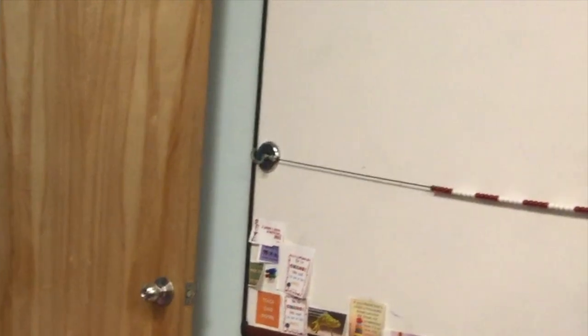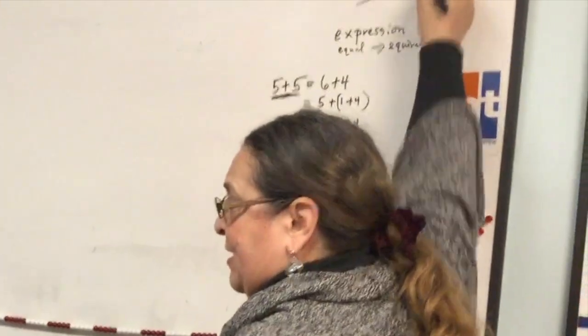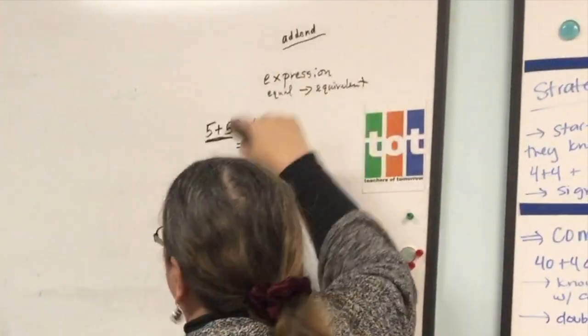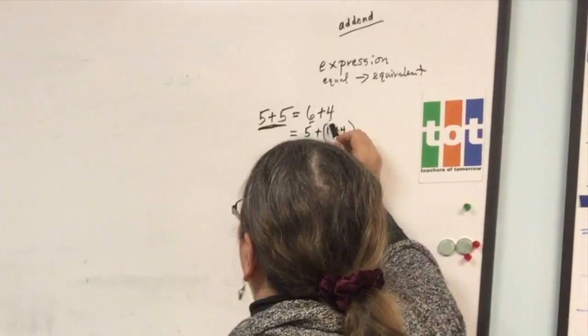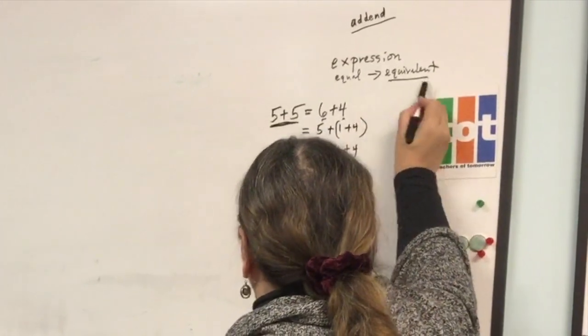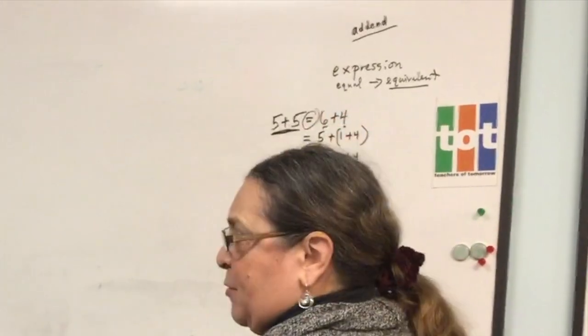So, when you said seven plus three, the seven is an addend. The three is an addend. In six plus four, the six is an addend. The four is an addend. And then equivalent to is how we're talking about that.